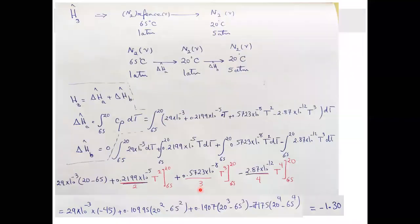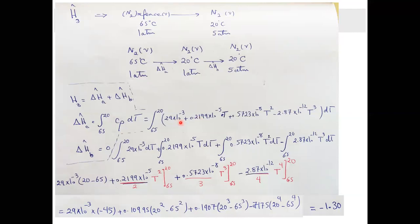For H3 — nitrogen at 20°C and 5 atm — the reference point is nitrogen at 65°C and 1 atm. Since nitrogen remains in vapor phase throughout, and pressure changes are small, V·ΔP is negligible. We only need to calculate Cp·dT for the temperature change from 65°C to 20°C at constant pressure. Read this Cp data from Table B2 for nitrogen and substitute the temperature values.